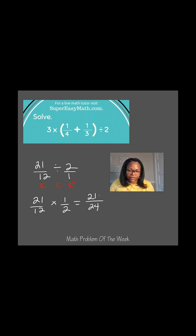Now I have to ask myself, can something go into both 21 and into the 24? Yes, 3 can. So I'm going to divide by 3 on both the top and the bottom. And I have 21 divided by 3, which is 7, and 24 divided by 3, which is 8. So my final answer for this problem is 7/8.